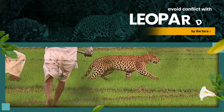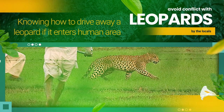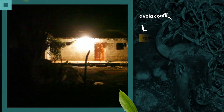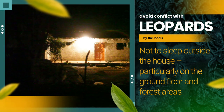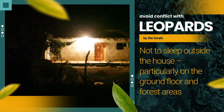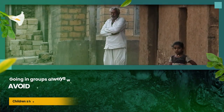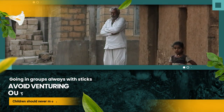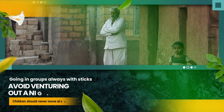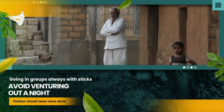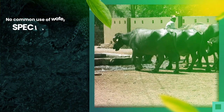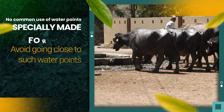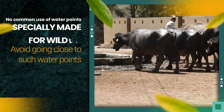Knowing how to drive away a leopard if it enters a human area. Not sleeping outside the house, particularly on the ground floor and in forest areas. Going in groups always with sticks. Avoiding venturing out at night. Children should never move alone. No common use of water points specially made for wildlife — avoid going close to such water points.